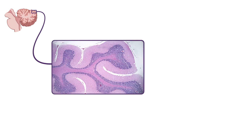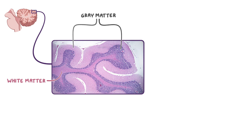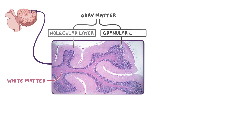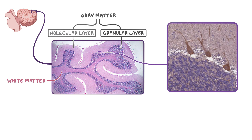Moving to the cerebellum, at low power the cortex has three layers seen with an H&E stain. The innermost layer that stained dark pink is the white matter. The outer light pink layer and the dark purple middle layer are both part of the gray matter — the outer layer is the molecular layer and the dark purple layer is the granular layer. Zooming in closer to the border of these two layers, we can see a single layer of neurons called Purkinje cells that sit between the upper molecular layer and the lower granular layer.